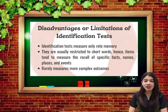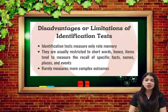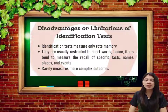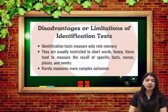Identification test also has disadvantages or delimitations. The first one is identification test measures only rote memory. The second one is they are usually restricted to short words; hence, items tend to measure or recall specific facts, names, places, or events. The third one is it rarely measures more complex outcomes.